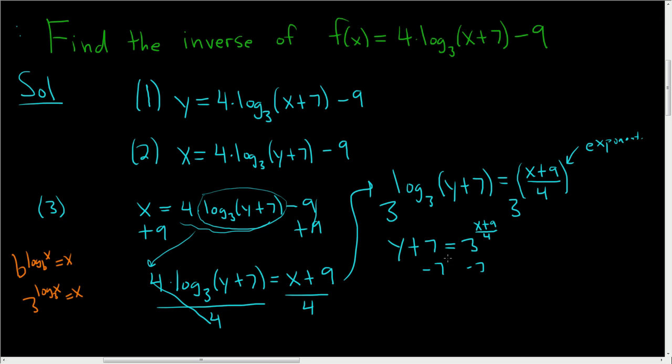Now we'll just subtract 7. So we end up with y equals 3 to the x plus 9 over 4 minus 7.